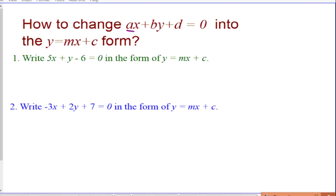How to change the standard form AX plus BY plus D equal to 0 into the gradient and intercept form, because here's the gradient, here's the Y-intercept.